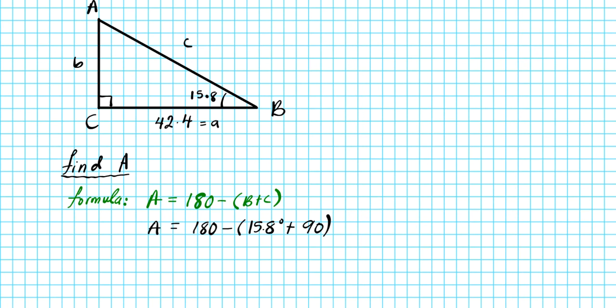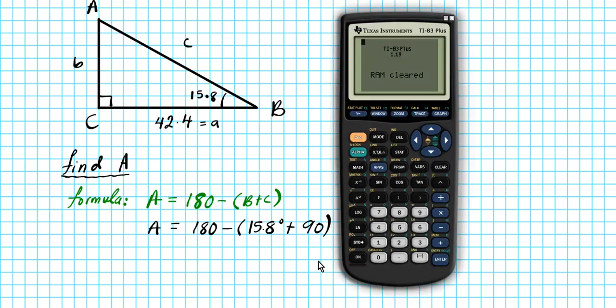Let's go ahead and enter this expression into our calculators. So we will have 180 minus parentheses 15.8 plus 90. And that will give us the measure of angle A, which is 74.2 degrees. So big A is 74.2 degrees.